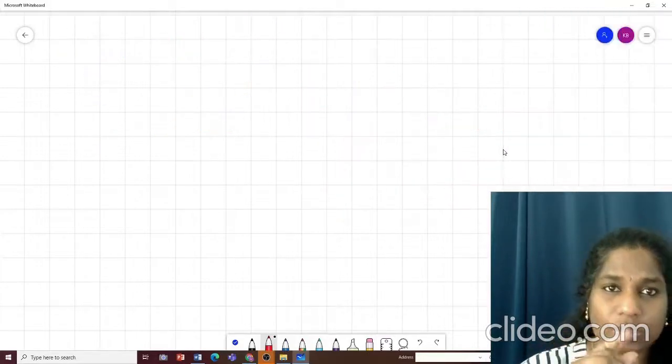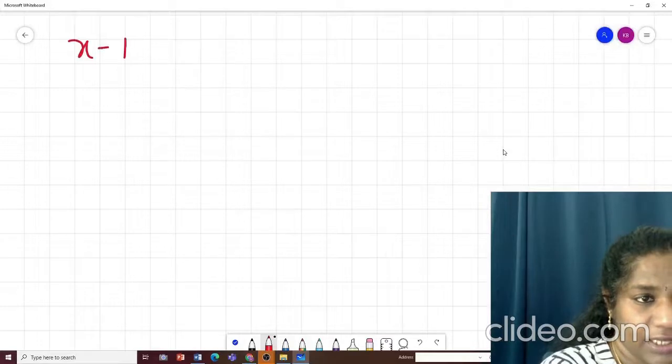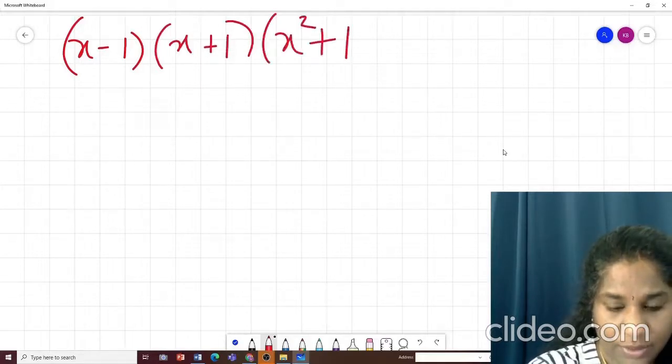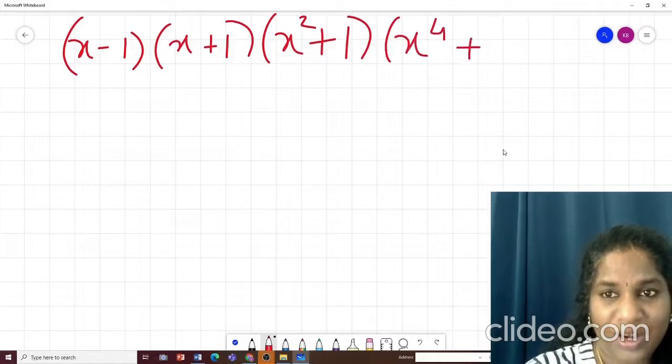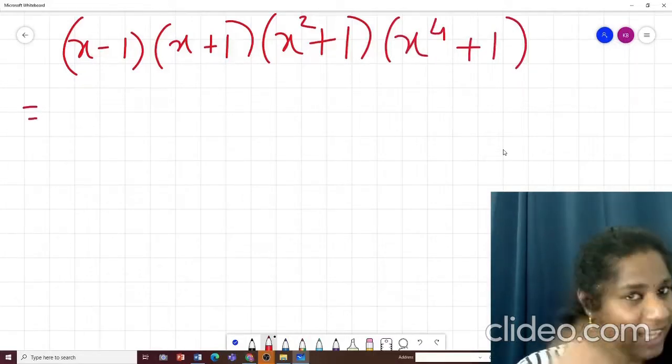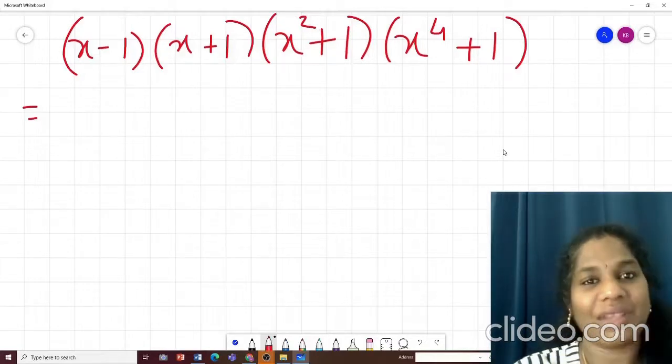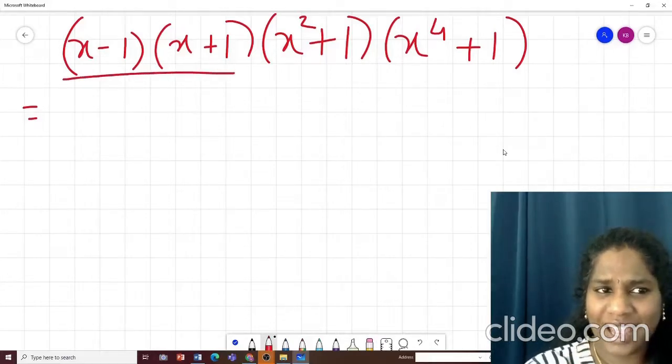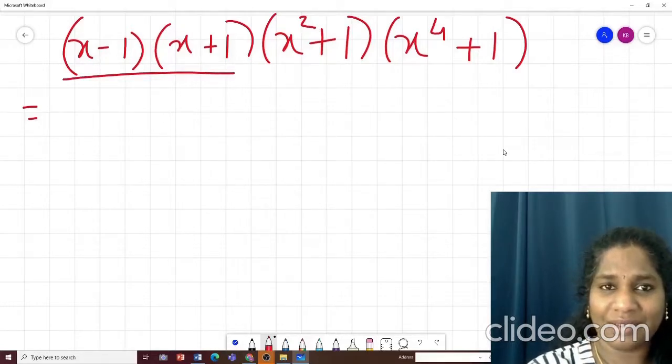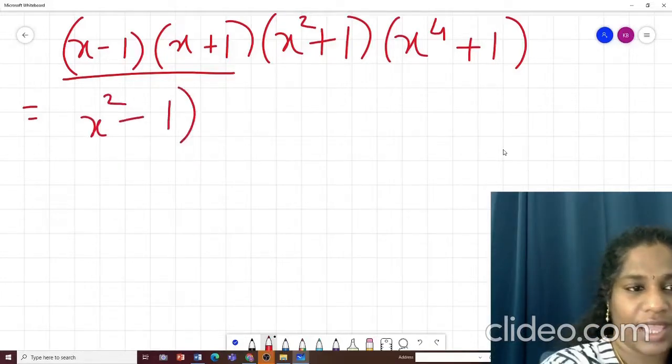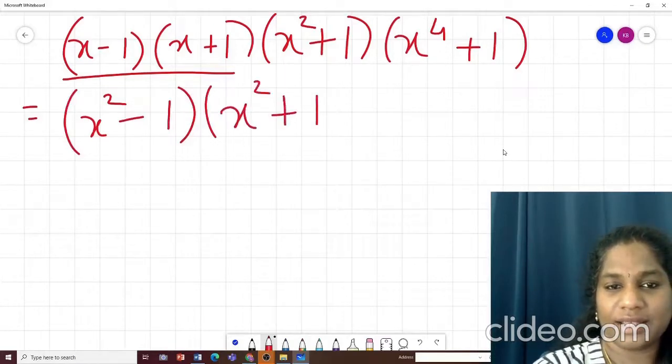What if you get slightly twisted question. What if you get a question like x minus 1 into x plus 1 into x square plus 1 into x raised to 4 plus 1? If you get a question like this, how will you solve it? Anybody wants to do a trial can do it. So what I would do is, I would first look here. Do I sense an identity here, x minus 1 into x plus 1, a plus b into a minus b, can you see that? So this will become a square minus b square.